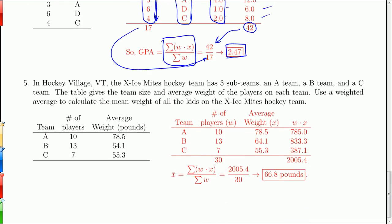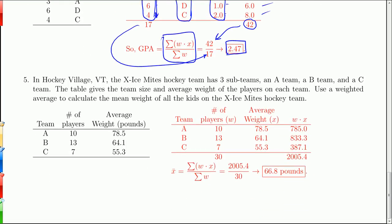Here I want you to find a weighted average to determine the average of all players in a certain hockey league. All right. So you have 3 teams: the A team, the B team, the C team. There are 10 players on the A team, 13 on the B, and 7 on the C. And the average from each team: 78.5, 64.1, and 55.3. So the question is, or the request is, to calculate the mean weight of all kids on the Ice Mites hockey team.